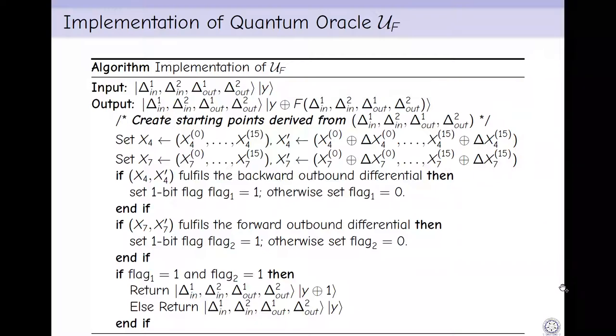We now create starting points from the input-output differences. First we set x4 and x4' from x4[0] to x4[15] and their differences. Similarly we set x7 and x7'. Now if x4 and x4' fulfill the backward output differential, then we set one-bit flag1 as 1, otherwise 0. If x7 and x7' fulfill the forward differential, then we set flag2 as 1, otherwise 0. If both flag1 and flag2 are 1, then we update the output register as y⊕1, otherwise y remains invariant.